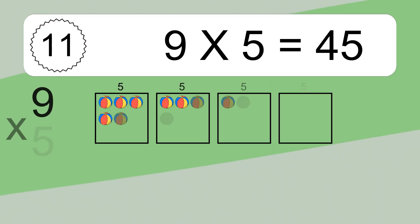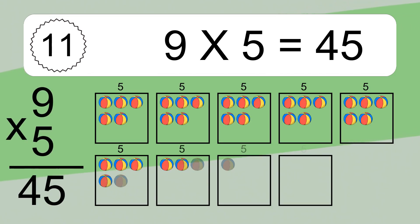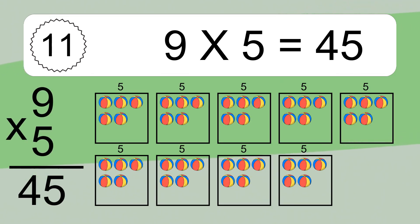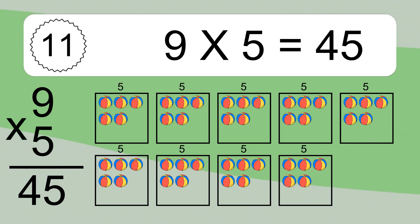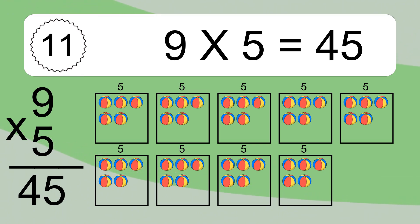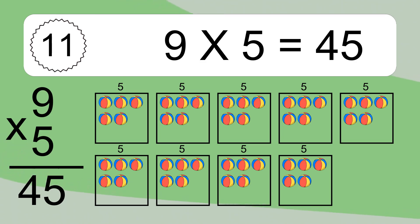9 times 5 equals 45. We have 9 boxes, and each box has 5 colorful balls inside. If you count all the balls in all the boxes together, you will have 9 times 5 balls. This equals 45 balls.